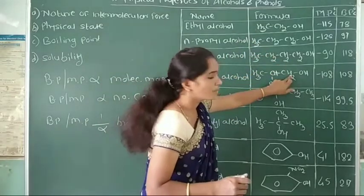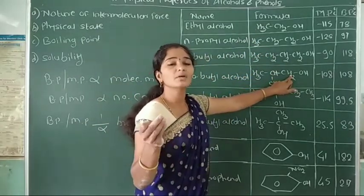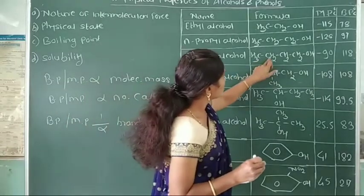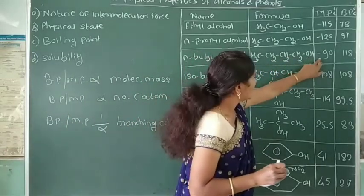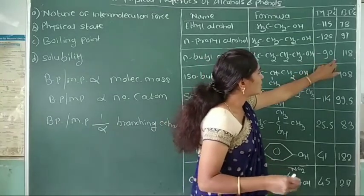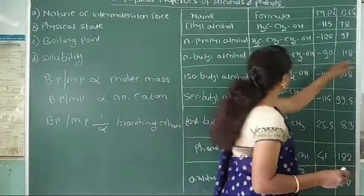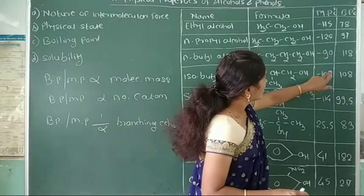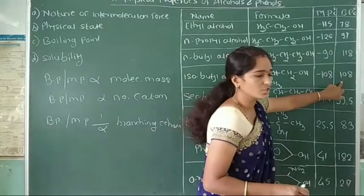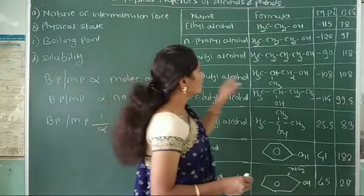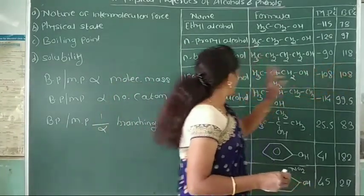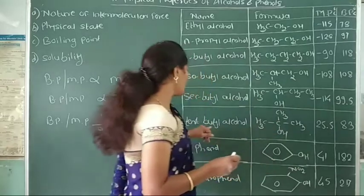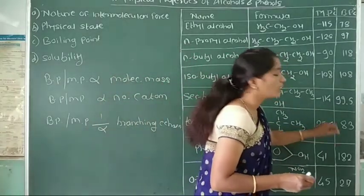For example, in n-butyl alcohol CH3CH2CH2CH2OH, melting point is minus 90°C and boiling point is 118°C. In isobutyl alcohol, melting point and boiling point both decrease. In secondary butyl alcohol, melting point and boiling point also decrease. And in tertiary butyl alcohol, melting point and boiling point decrease further.